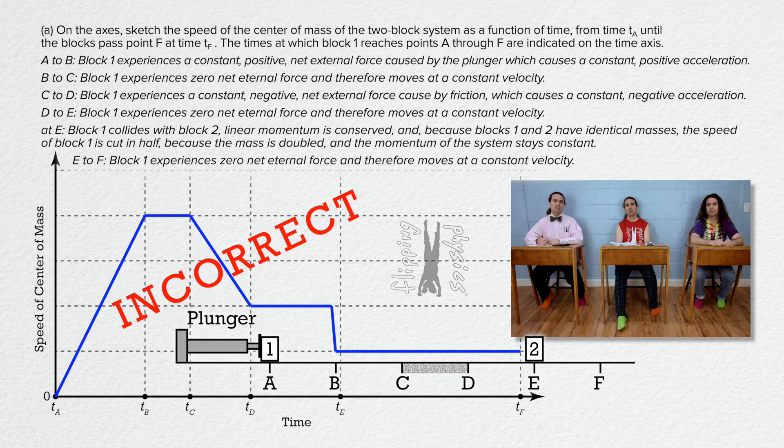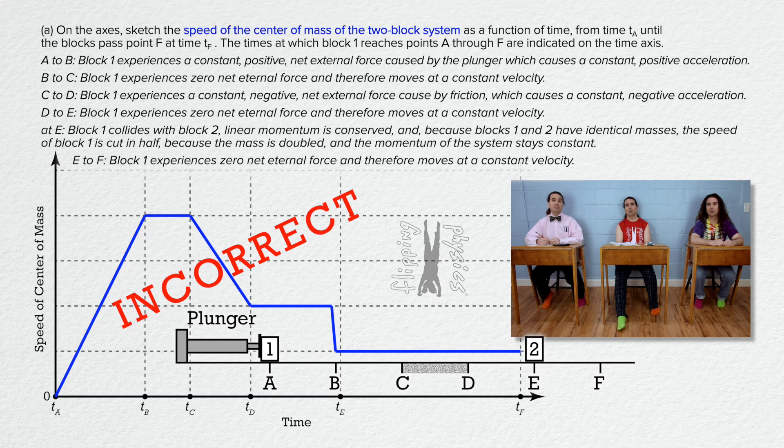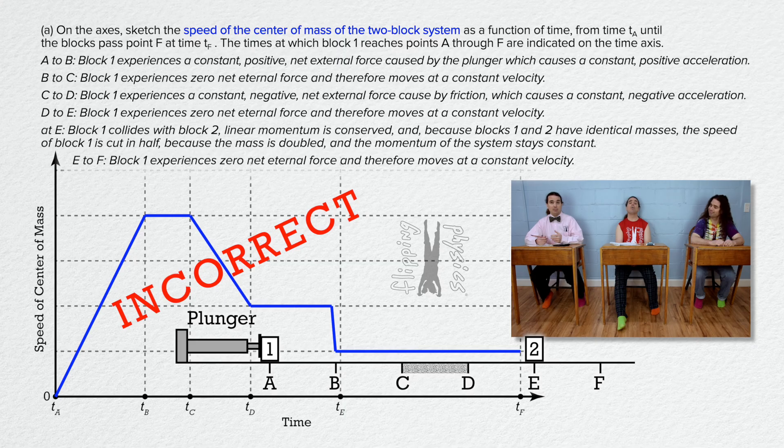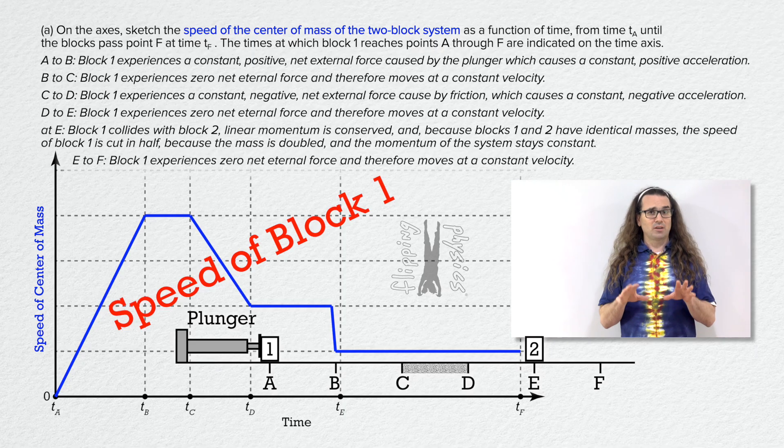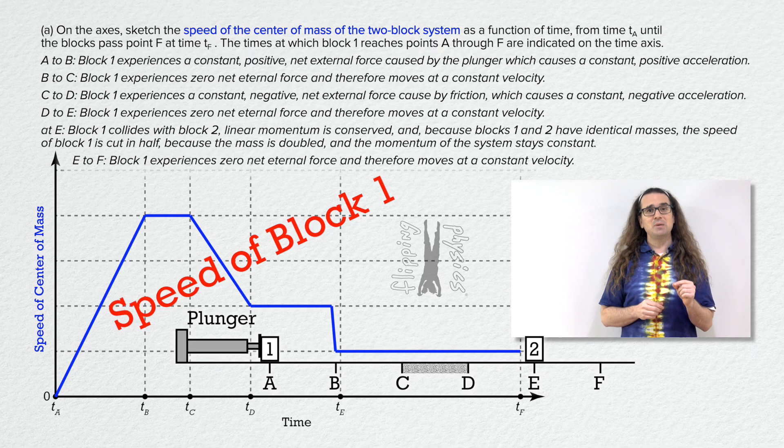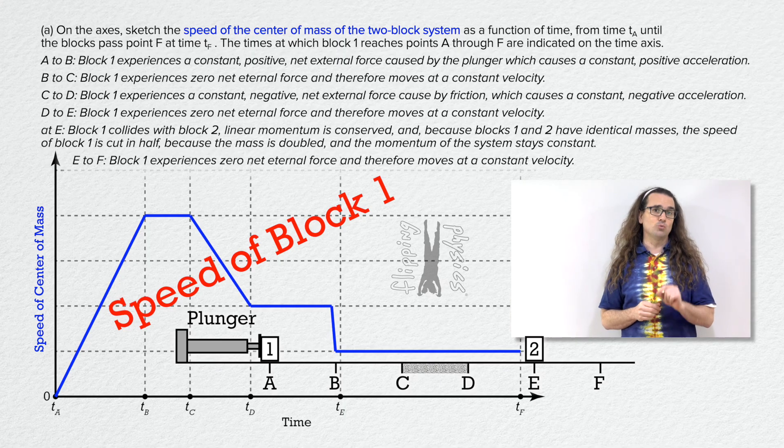The question asks for the speed of the center of mass of the two-block system as a function of time. Yeah, it's even written on the graph right there on the y-axis. Speed of center of mass. Duh. Right, the graph you created is for the speed of block 1, not the speed of the center of mass of the two-block system.